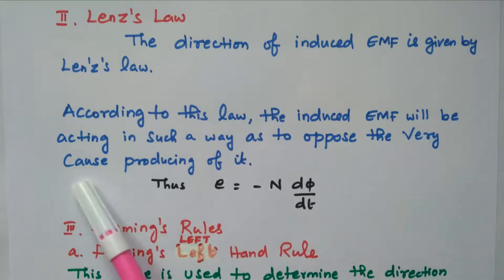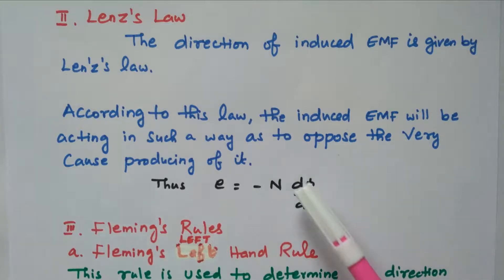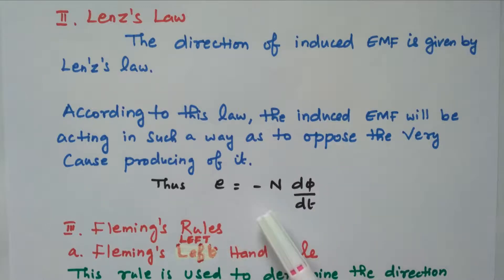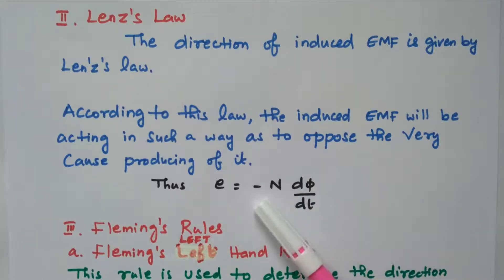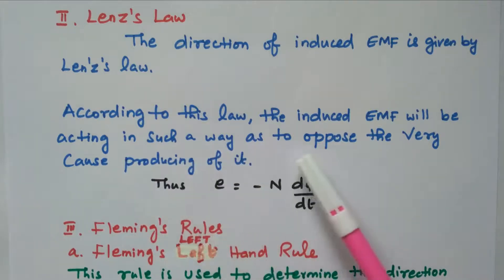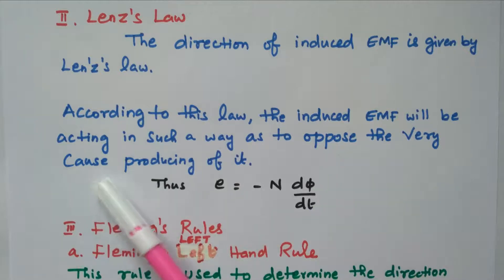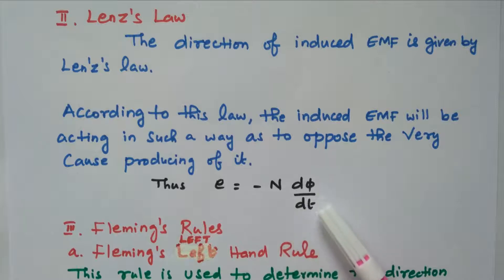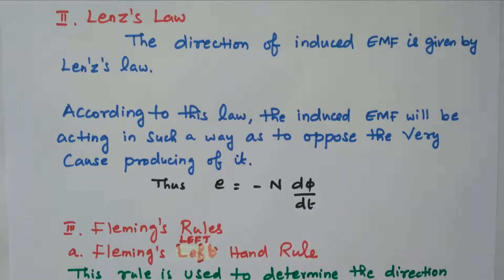The cause producing it means the applied voltage. Both the induced EMF and the applied voltage oppose each other. Therefore, E = -N dφ/dt. This negative sign indicates the direction given by Lenz's law — the induced EMF opposes the rate of change of flux.